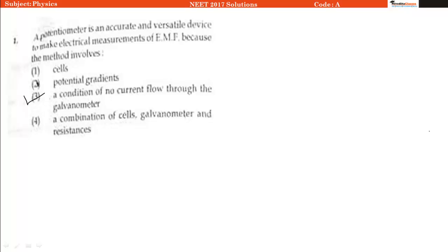It says a condition of no current flow through the galvanometer. This means that at the null point there will be no current flow, and if there is no current flow, then the terminal voltage will be equal to EMF and we will be able to measure the correct value of EMF.